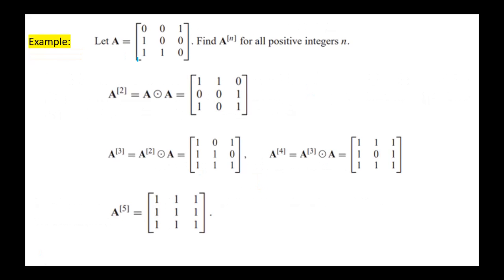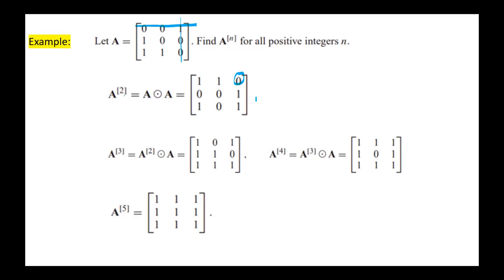For example, given matrix A equals [0,0,1 / 1,0,0 / 1,1,0], find A to the power N for all positive integers N. A² equals A Boolean-product A. The first element is obtained by multiplying the first row by the first column: 0, 0, also 1. Entry A13 is obtained from the first row and second column: 0, 0, 0, also 1. Entry A13 from the first row and third column: 0 OR 0 OR 0. We continue in the same manner.